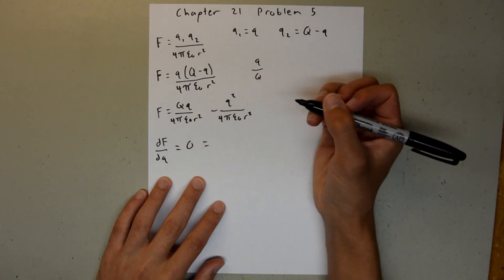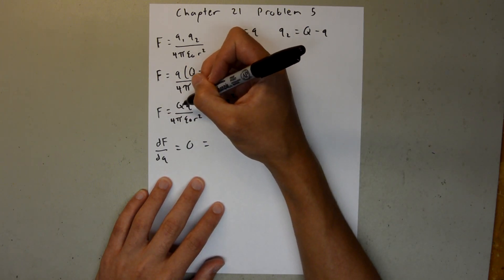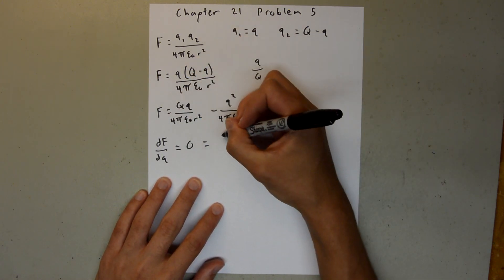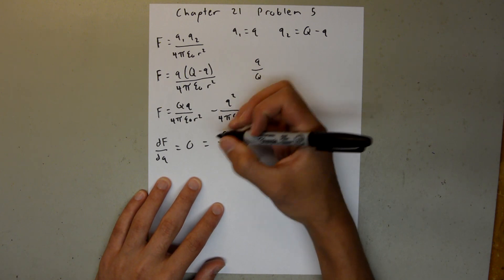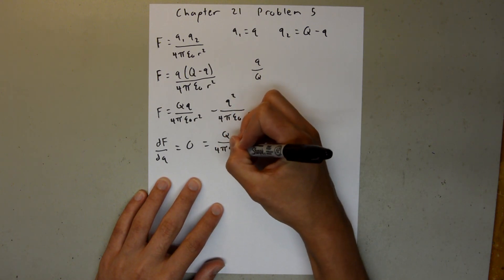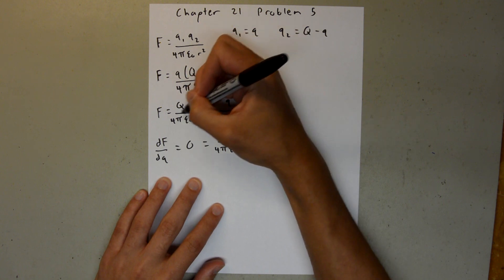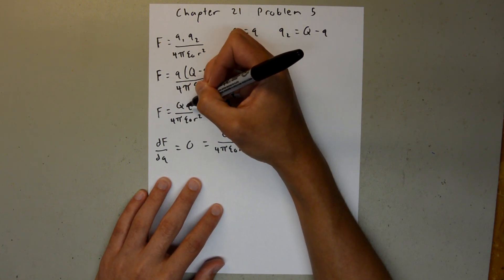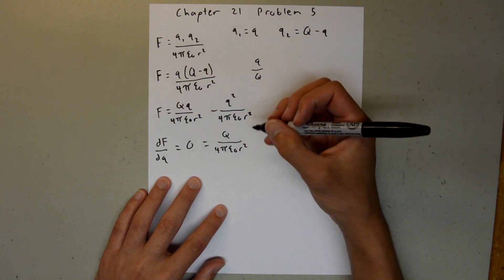So, we have 0 is equal to, the derivative of this term with respect to little q is just Q over 4 pi epsilon sub 0 r squared. Because this is the only term that has the little q in it. So, derivative of q is just 1, so you'll be left with a big Q.